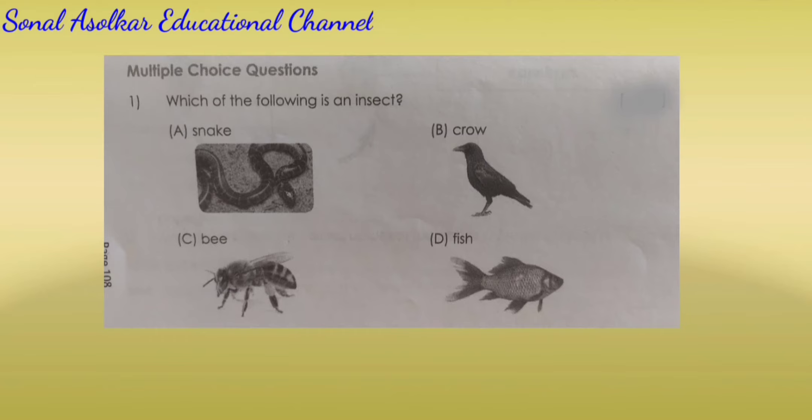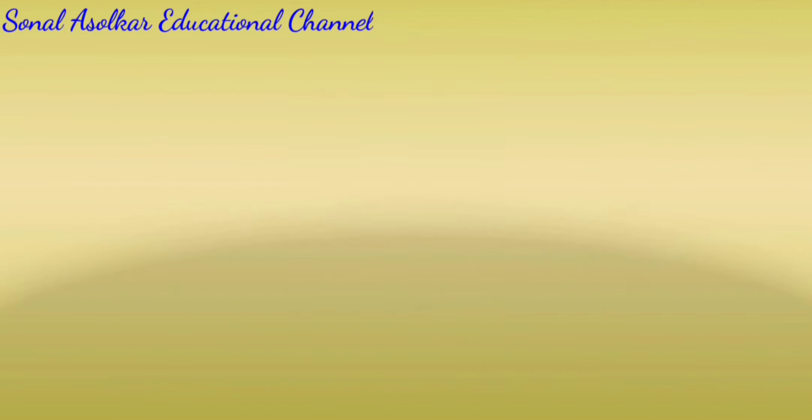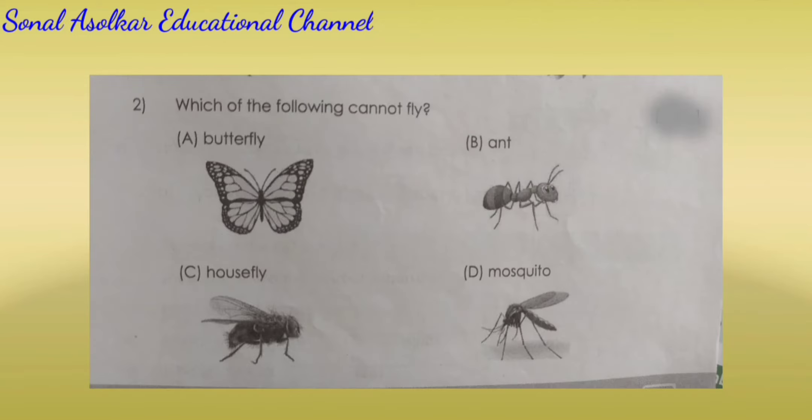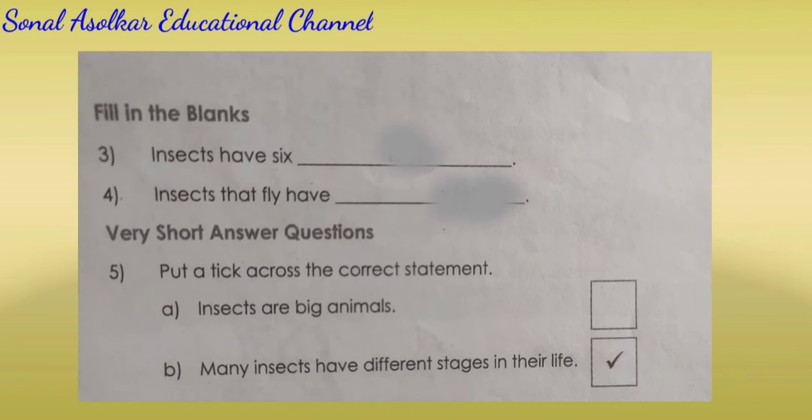Question number 1. Multiple choice questions. Which of the following is an insect? Option A. Snake. Option B. Crow. Option C. Bee. Option D. Fish. Correct answer is option C. Bee. Question number 2. Which of the following cannot fly? Option A. Butterfly. Option B. Ant. Option C. Housefly. Option D. Mosquito. Answer is option B. Ant.